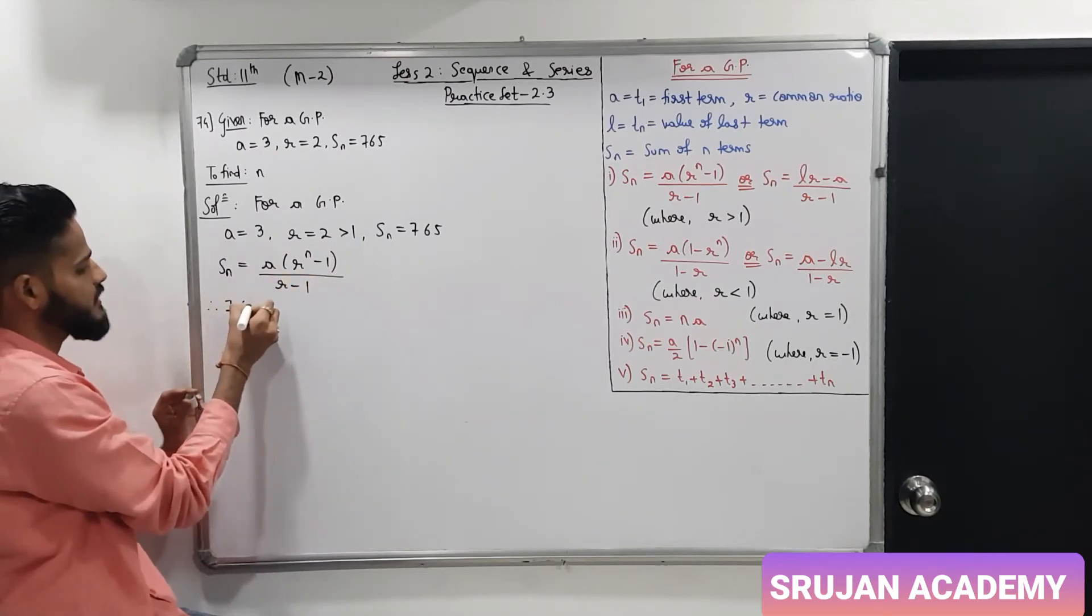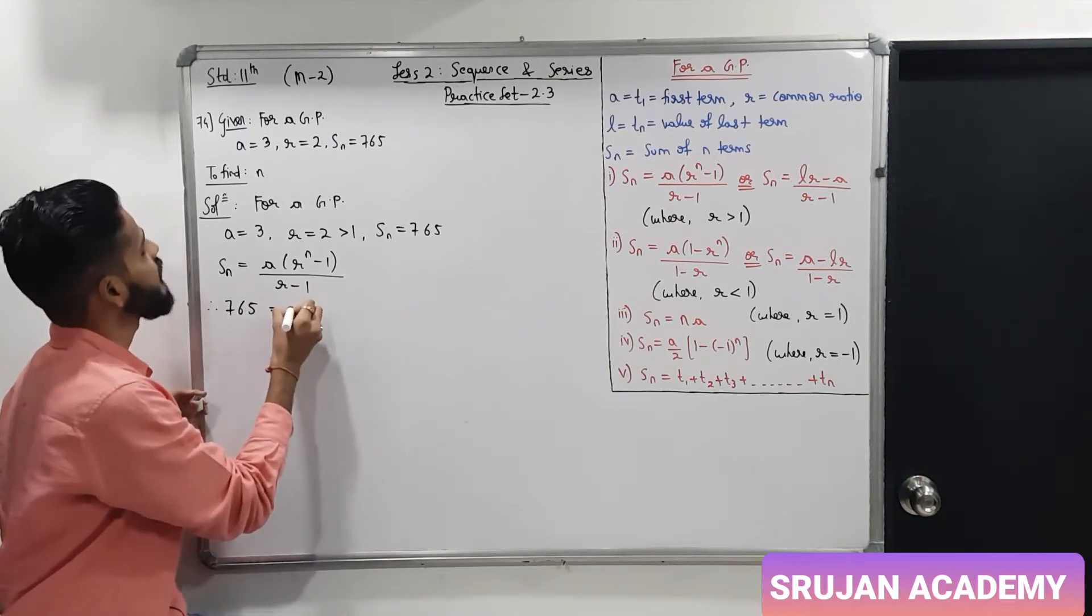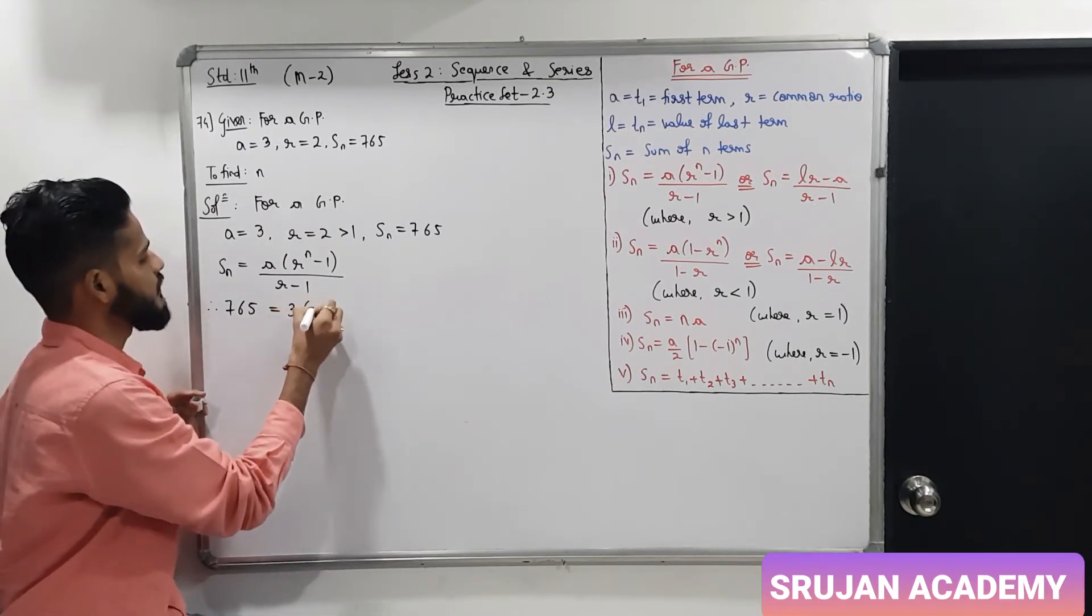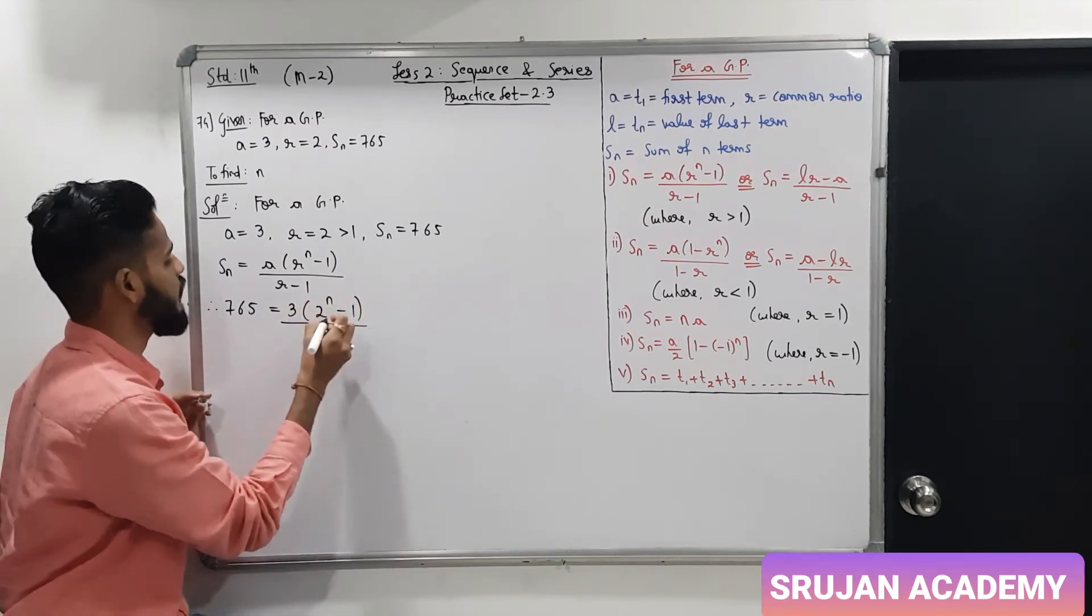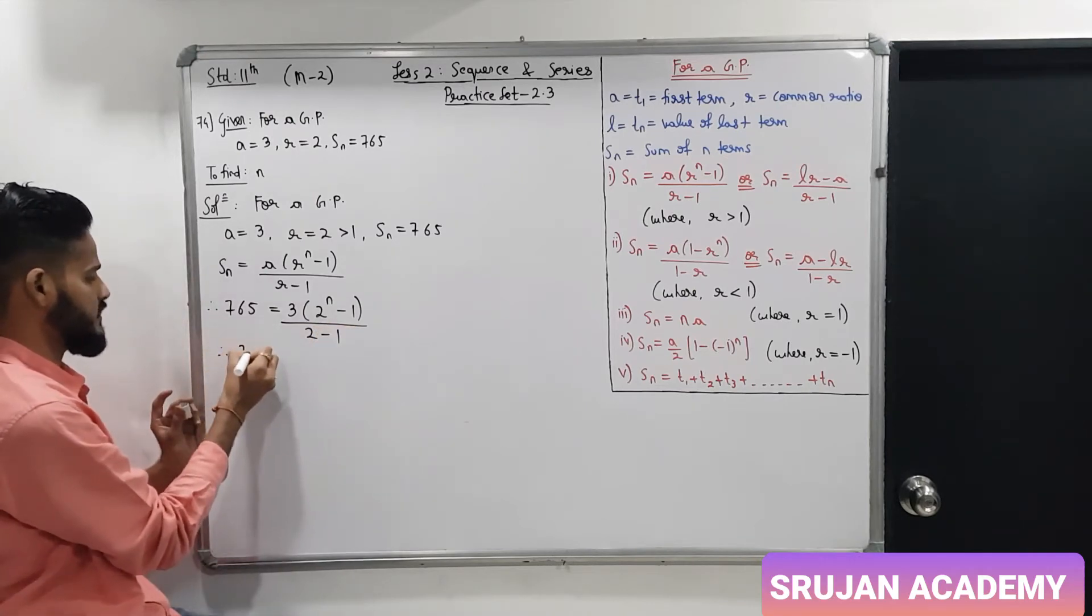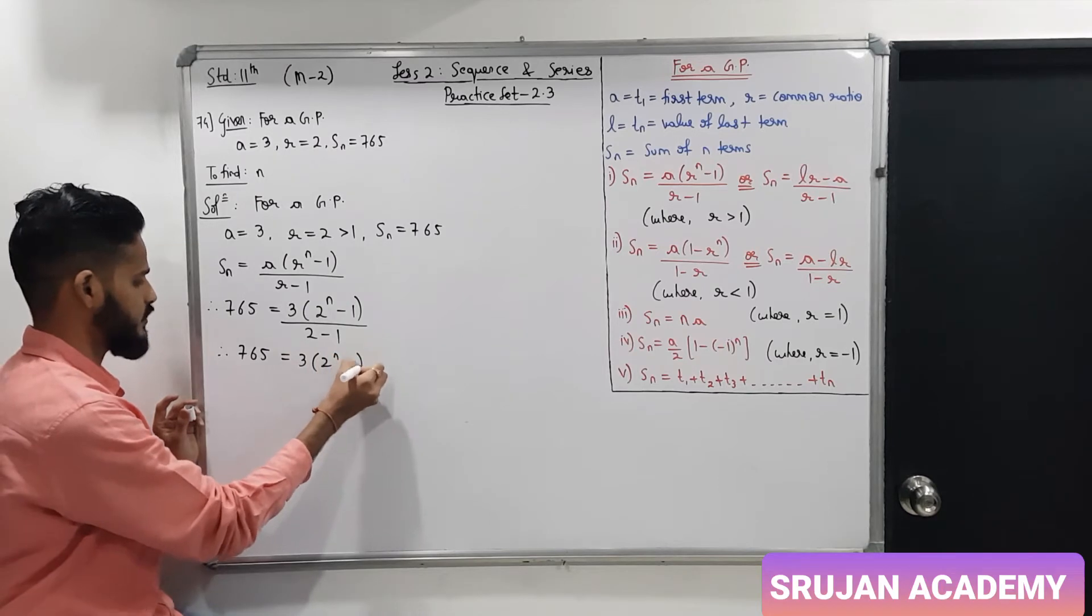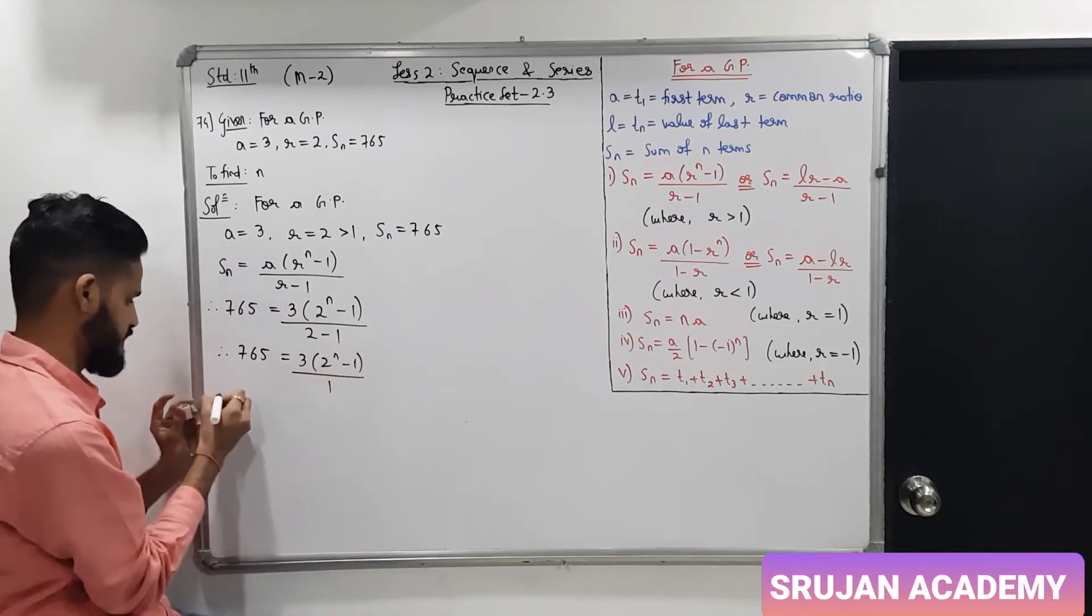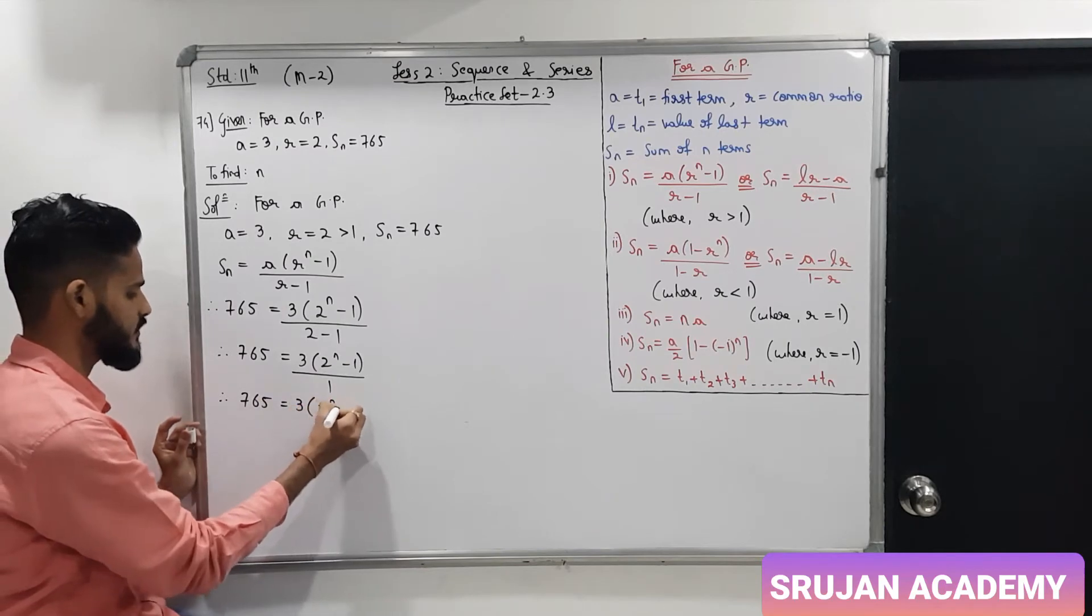Sn is given as 765 equals 3 times 2 raise to n minus 1 upon 2 minus 1. So, 765 equals 3 into 2 raise to n minus 1 upon 1. So, 765 equals 3 into 2 raise to n minus 1.